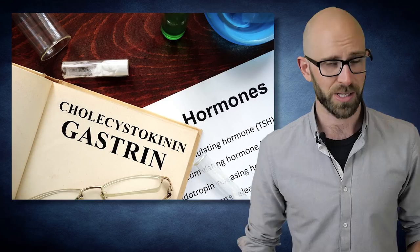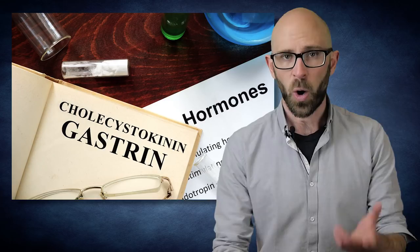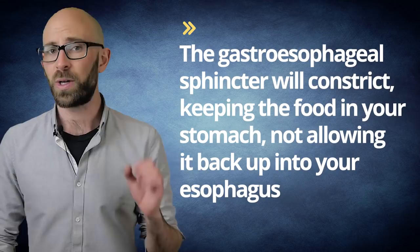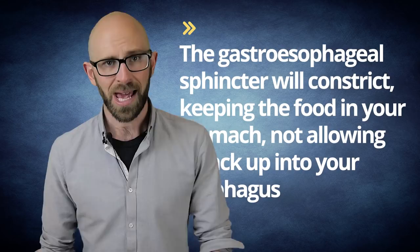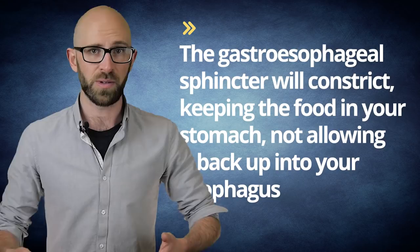Gastrin is produced when the body senses the presence of food in the stomach, or your vagus nerve gets stimulated by one of your senses, like taste or smell, in response to food. Its release causes several reactions within the body. The gastroesophageal sphincter will constrict, keeping the food in your stomach, not allowing it back up into your esophagus.